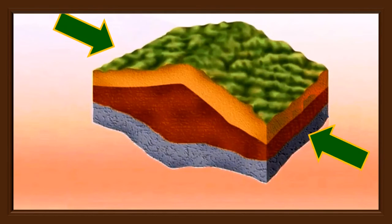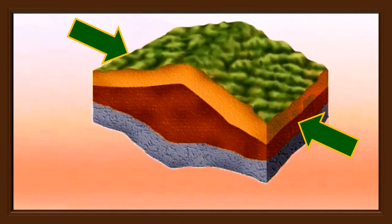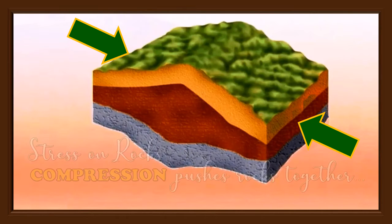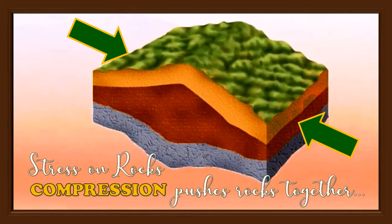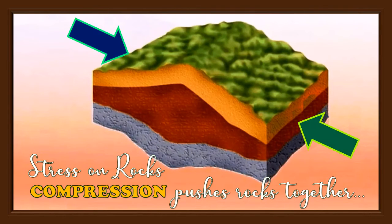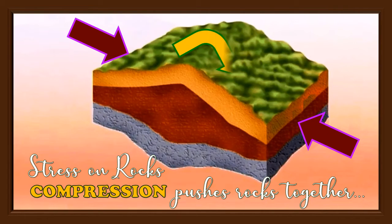When rocks meet under compressional stress, the orientation can either be horizontal or vertical. Horizontally, the crust may thicken or shorten. Vertically, the crust may thin out or break. Compression pushes rocks together; as seen in the picture, the stress on both sides is directed towards the center, and the product is the formation of a mountain.